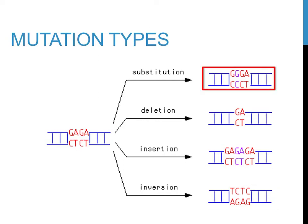Substitution mutations replace, or substitute, one or more letters of the original DNA sequence. In this depiction, the sequence changes from GAGA to GGGA. Note that the first letter of this typical sequence has been changed into a G.